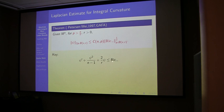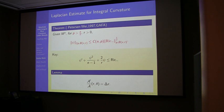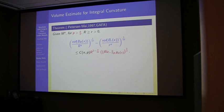Once we have the Laplace comparison, it is standard that it relates to volume comparison, because the Laplacian of the distance function is related to the change of area of geodesic spheres. Looking at a center point x_0, writing the volume element in polar coordinates, the logarithmic derivative of the area element a is exactly given by the Laplacian of r. Therefore if we have control of this we naturally expect control on the volume.